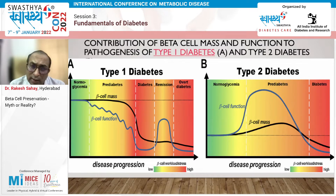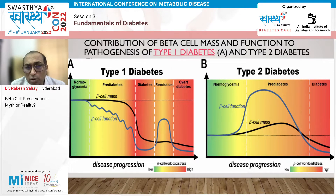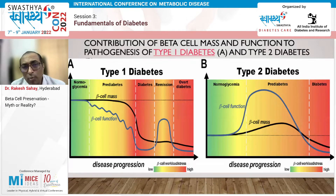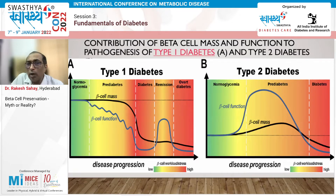In type 2 diabetes, insulin resistance develops earlier, causing an initial increase in beta cell function and beta cell mass, which keeps glucose levels in the normal range. Subsequently, there is a decline in beta cell mass that leads to the development of diabetes.